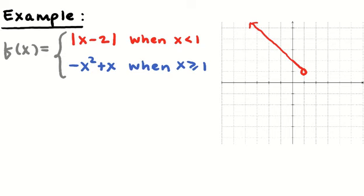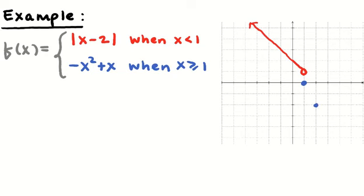For negative x squared plus x: if we're going to graph a parabola, we find the vertex using negative b over 2a — that's negative 1 over 2 times negative 1, giving x = 1/2, which isn't in the domain we're interested in. Starting at x = 1: plug in 1 to get 0; plug in 2 to get negative 2; plug in 3 to get negative 6. So this is just part of a downward parabola.